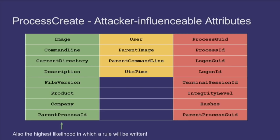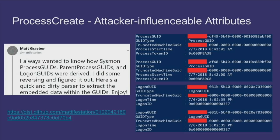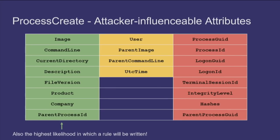I didn't blindly accept that the red fields would not be directly influenceable. For example, I didn't understand how the process GUID was actually built until I reversed the Sysmon service and learned it's comprised of the machine GUID — retrievable from the registry — plus the time of process start and the token ID. I had to understand how it was derived so I could be confident placing it in the red category rather than making assumptions. It's those naive assumptions that we as evasive attackers try to take advantage of.